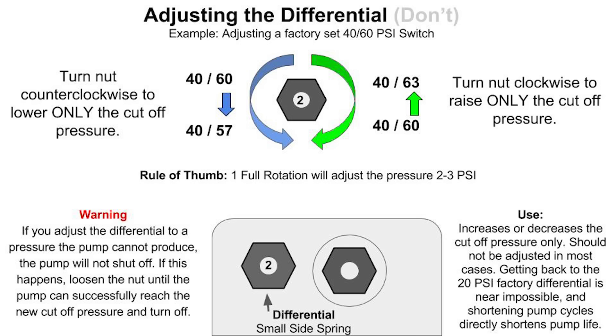The spring that's used in the differential is a lot less forgiving than the spring that's used on the range or the primary adjustment, and so it can often be a lot more difficult to get it back to the factory settings.